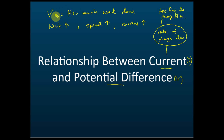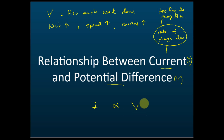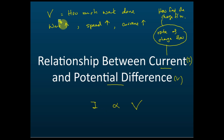So what's the relationship between potential difference and current? The current must be directly proportional to the potential difference. The higher the potential difference, the higher the current — because higher potential difference does more work, moves the charge faster, and therefore the current is higher.